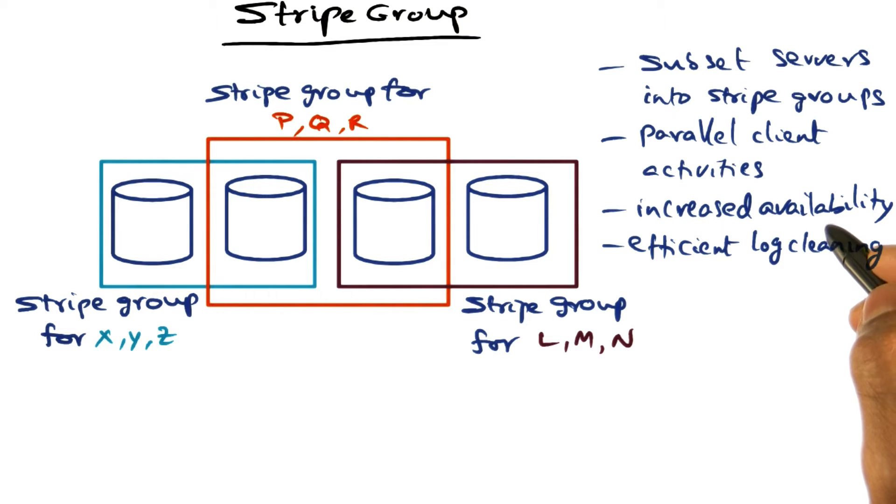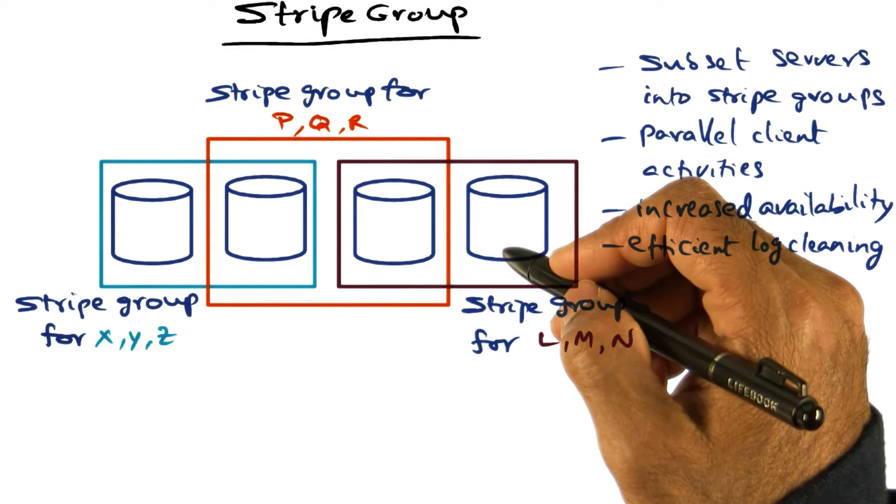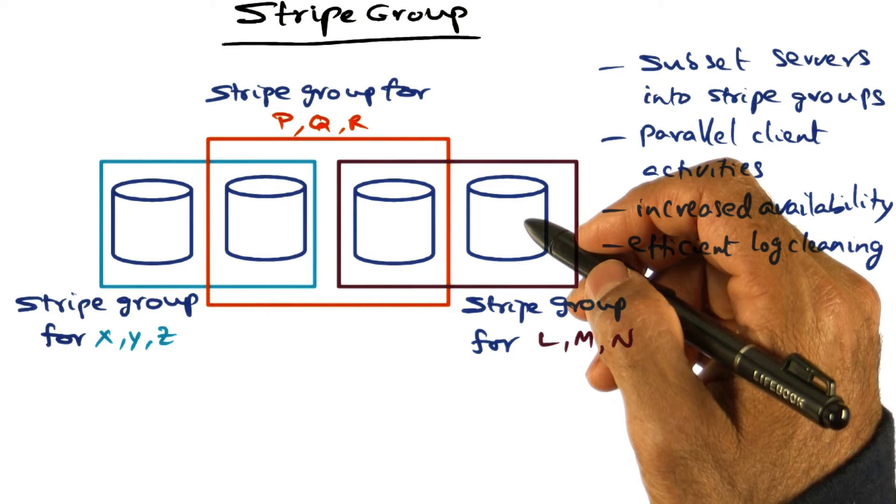In saying that not all the servers have to be working on the same client requests. Different subsets of servers are working on different client requests, and that results in higher throughput for overall client processing.